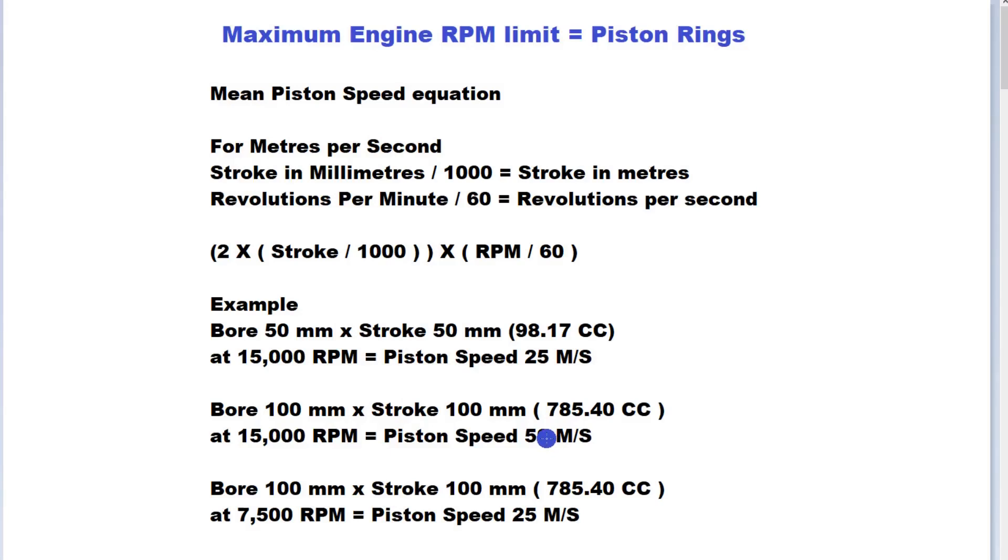A more realistic RPM for a single cylinder engine, keep in mind that's for just one cylinder, a bore of 100 mm and a stroke of 100 mm, to achieve the same piston speed as our 100 CC engine of 25 meters per second at 15,000 RPM, for this engine we can only rev it to 7,500 RPM.